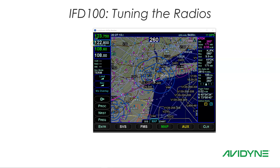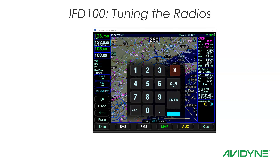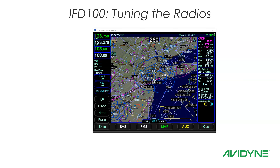With the active and standby shown, the first thing you can do is reach up and touch anywhere in the standby window. You'll get a numeric keyboard so you can dial in whatever frequency you want. Same for a NAV — just touch the standby and put in whatever frequency you like.